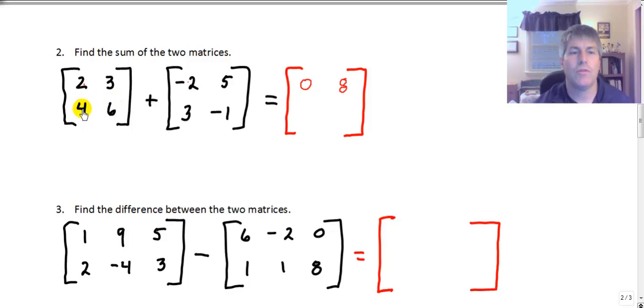Likewise, row 2 column 1, row 2 column 1 is 3. I can add those together. 4 plus 3 is 7. And 6 plus a negative 1 is 5. So when I add these two matrices together, my result is the matrix 0, 8, 7, 5.